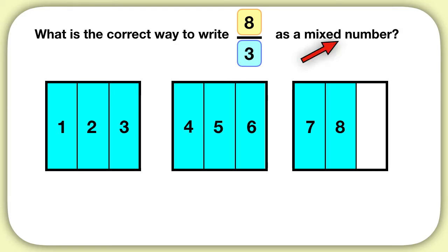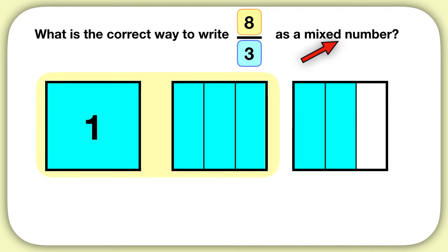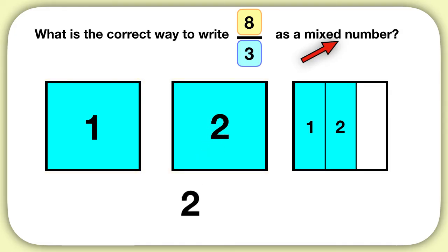Now to write this as a mixed number, I need to count how many whole squares I have. You can see I have 1, 2 whole squares. And what fraction do I have in my last square? You can see I have 1, 2 thirds. So we can write that we have 2 wholes and 2 thirds.